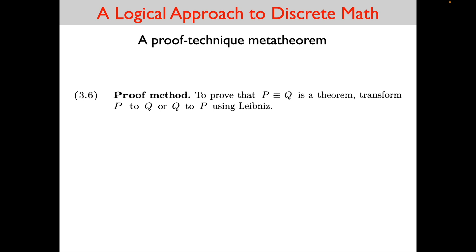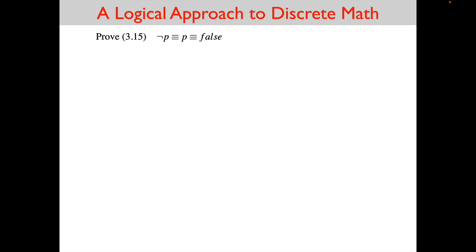We are going to illustrate this Proof Technique Metatheorem by proving 3.15, which is: not P equals P equals false. We are going to prove it two ways. First, we will prove it the way we normally have done — starting with the theorem and getting it to a previously proved axiom or theorem. Then we will prove it using the Proof Technique Metatheorem, which is a slightly different approach.